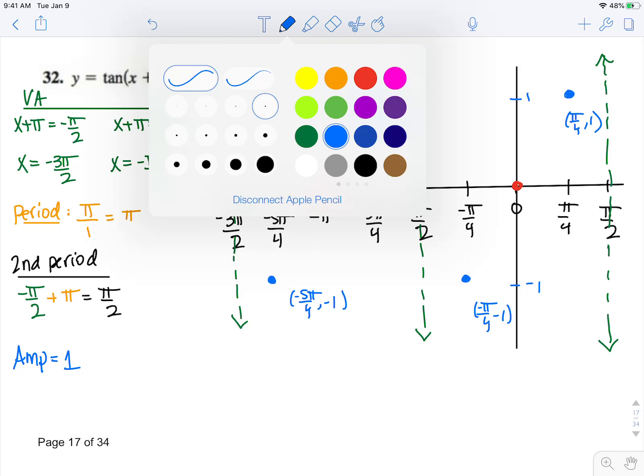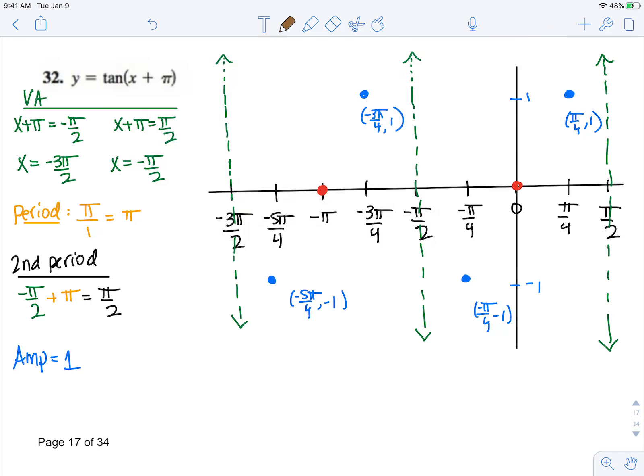And now we can connect these with our non-reflected tangent curves to full periods, knowing that we'll never cross those asymptotes.